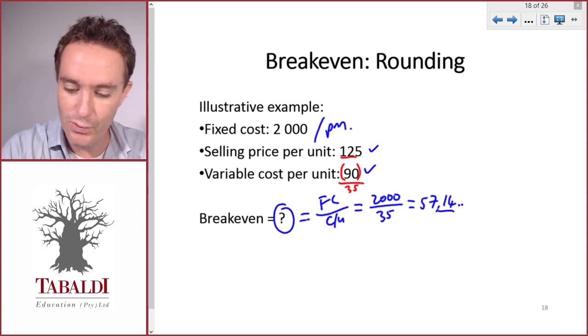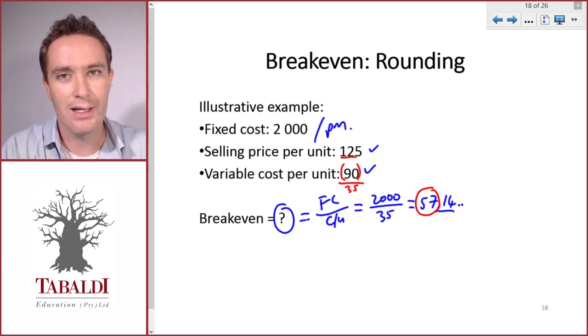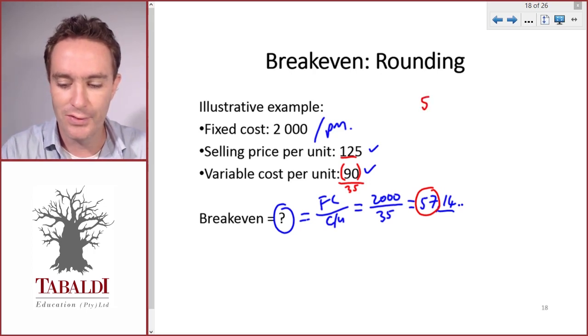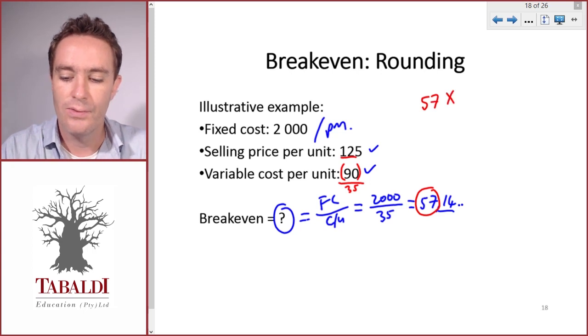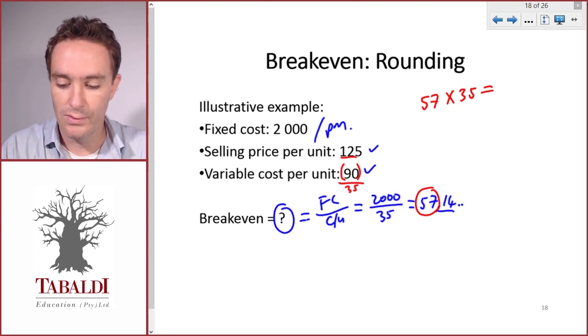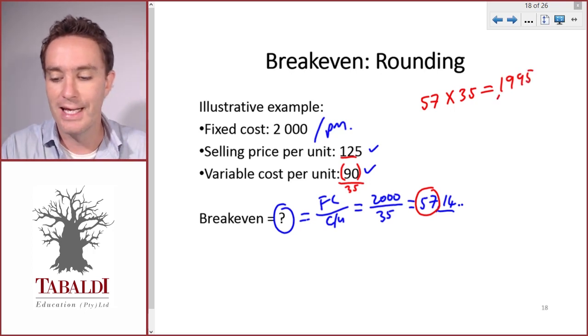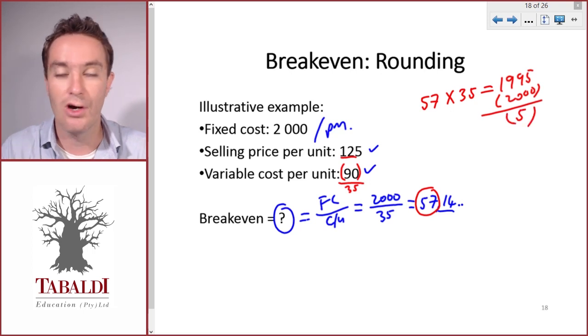What happens if we round down to 57? We can calculate profit for 57 bicycles. So 57 bicycles each contributing 35 will give us a contribution of 1,995 less the fixed cost of 2,000, which equates to a loss of 5.